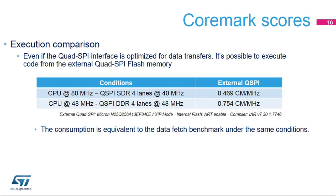Even if the Quad SPI interface is optimized for data transfers, it is possible to execute code from the external Quad SPI flash memory. The CoreMark results are better when using DDR mode. The consumption is equivalent to the data fetch benchmark under the same conditions.